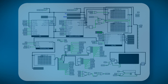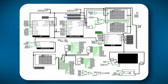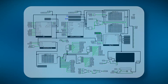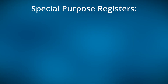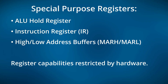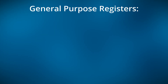There are eight registers in total on the TCPU 816. Four of them are special purpose registers: the ALU hold register, the instruction register, and the high and low address buffer registers. Those registers have a fixed function that can't be changed. We'll look at those registers later on, but for now we'll be looking at the remaining four registers.